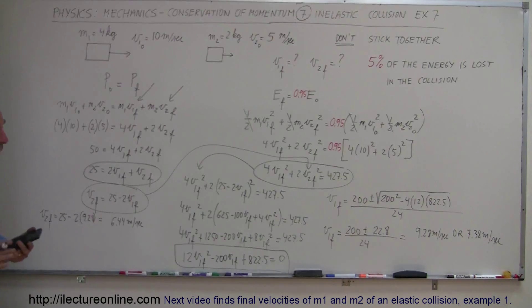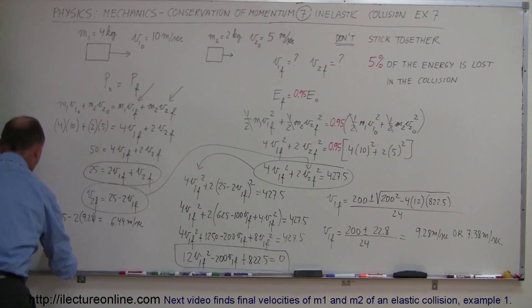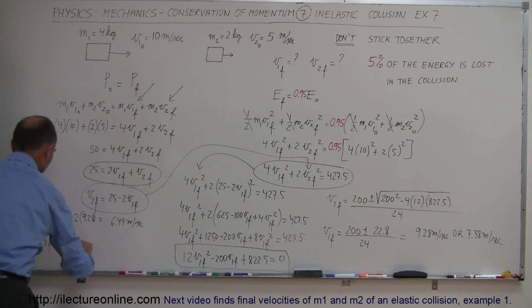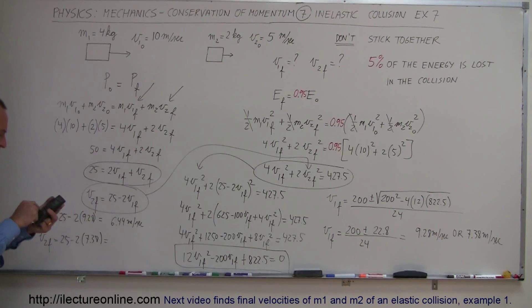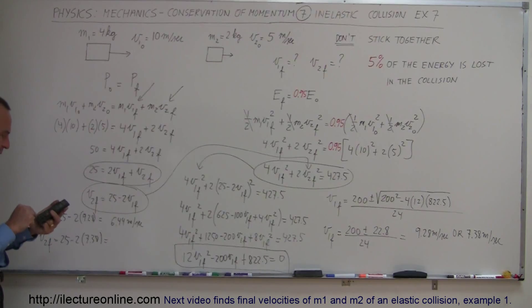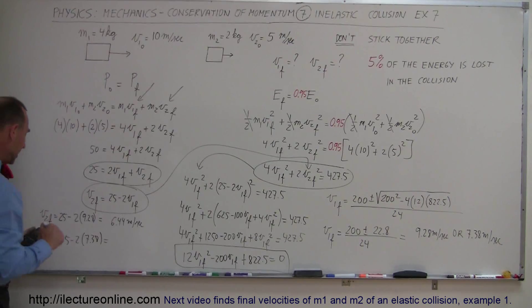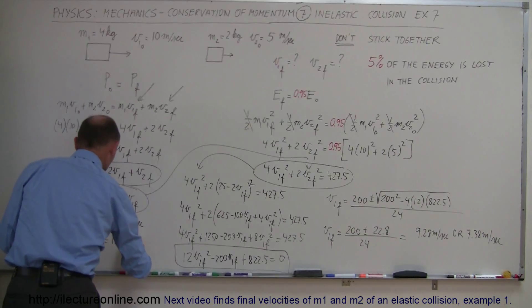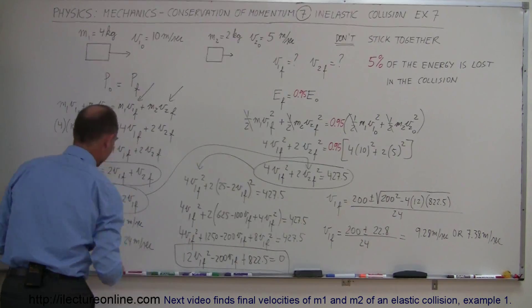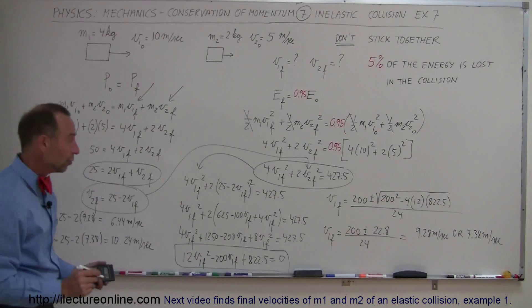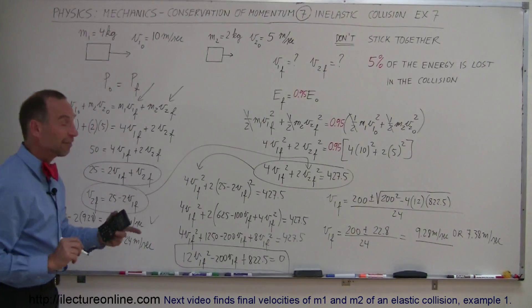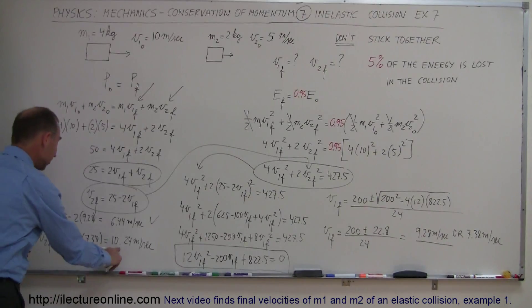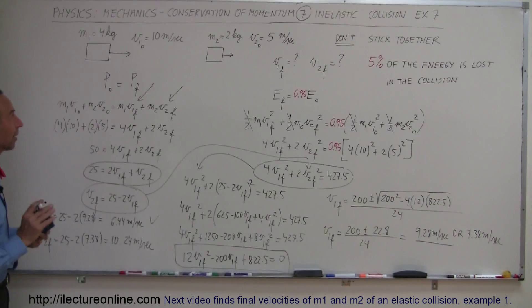If I use the other possible value for V1, so V2 final is equal to 25 minus 2 times I use 7.38 and see what I get there. So 7.38 times 2 subtracted from 25, ah here's the key here, 10.24 meters per second. All right so if I use the first answer 9.28 I get this for V2, but if I use the second answer 7.38 I get this for V2.